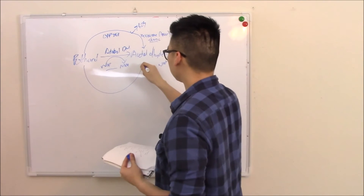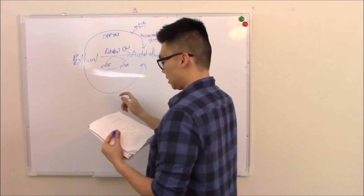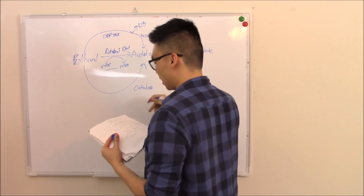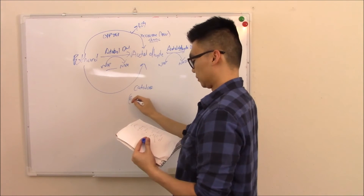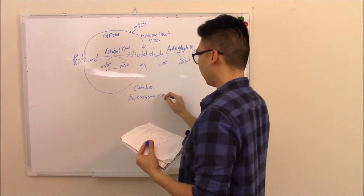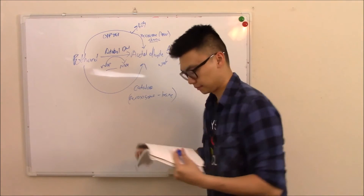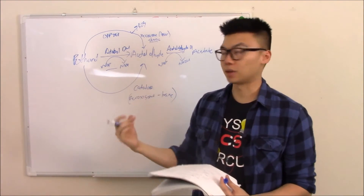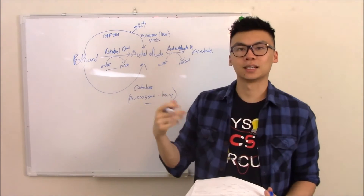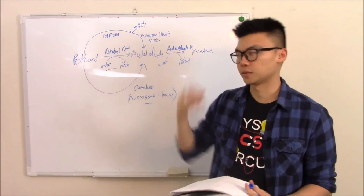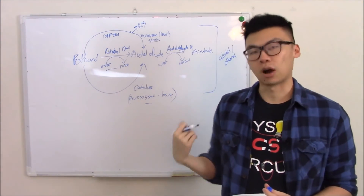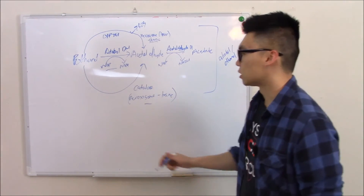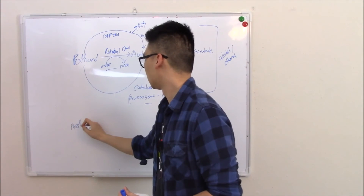Another enzyme you can recruit to turn ethanol to acetaldehyde is catalase, which is found in the peroxisomes of your brain. A theory — just a theory — is that by recruiting your brain to help you metabolize alcohol, it can create products that make alcoholic addiction possible, because it occurs in your brain.